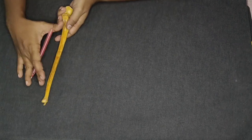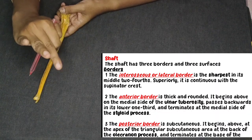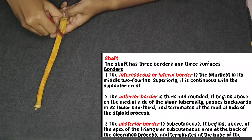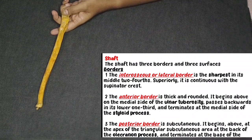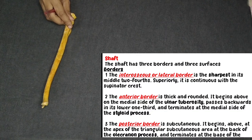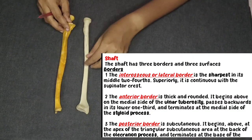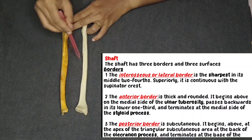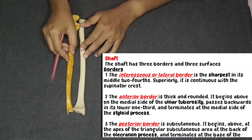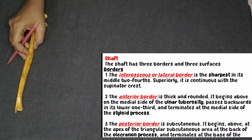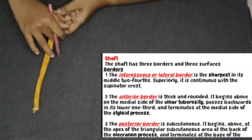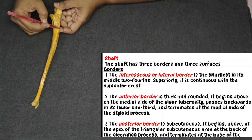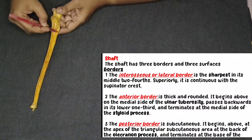Coming to the shaft — there are three borders and three surfaces. The borders are: the interosseous border, the anterior border, and the posterior border. The interosseous border — 'inter' means between, 'osseous' means bone — it is the border between the two bones. It is the sharpest border, located on the lateral side, and it is continuous with the supinator crest above.